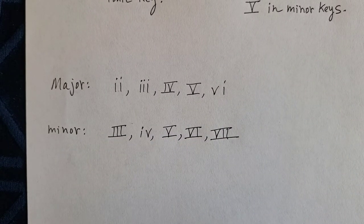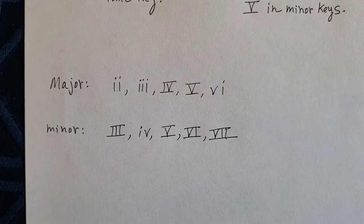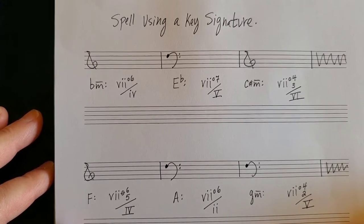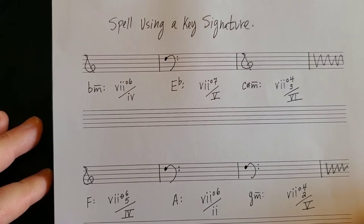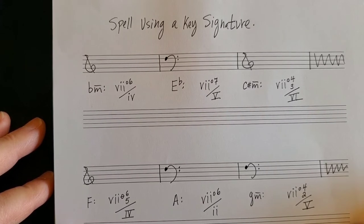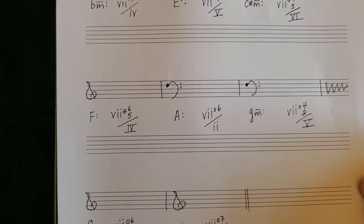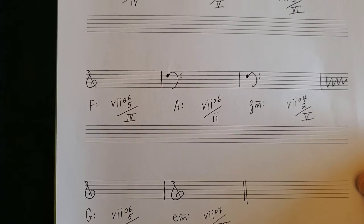You can also have secondary dominants of each one of these diatonic chords in major and minor as well. Now I'm going to show you how to spell these secondary leading tone chords. These are not from the book — they're just made up. Go ahead and pause the video and copy these problems down, including the ones at the bottom, and we'll go over them together.